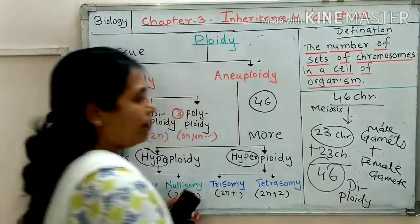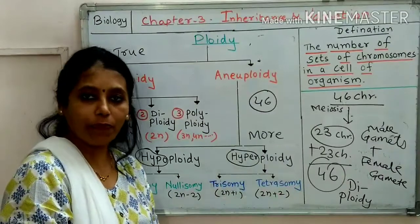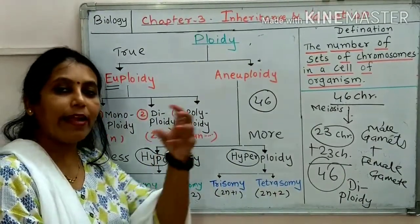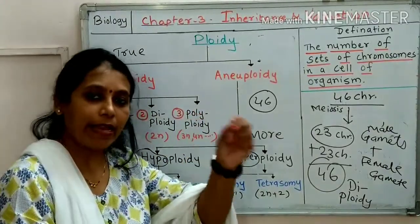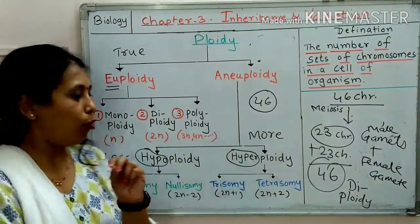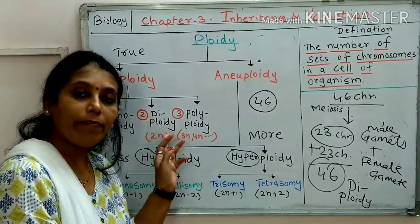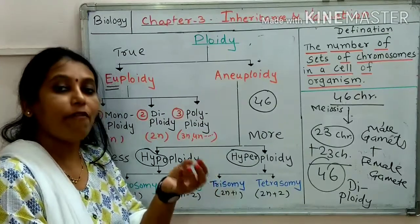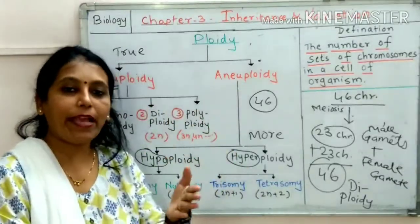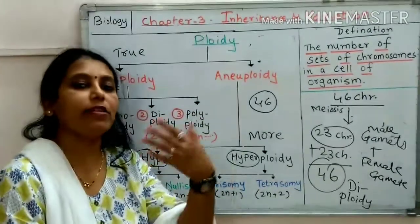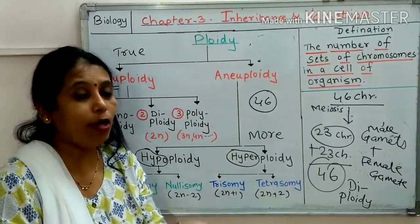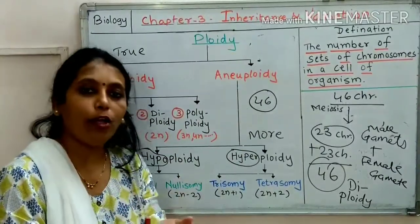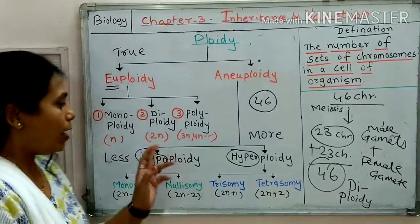You can also say it is diploid. Monoploidy means single set is present — example: gametes, male gamete that is sperm, and female gamete that is ovum. Diploidy means 2 sets are present in that particular organism. When the zygote is formed — male gamete and female gamete fuse — the structure formed is called zygote. In that zygote, one set is coming from the mother and one set is coming from the father, so overall two sets are present. So it is called diploidy.